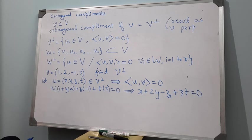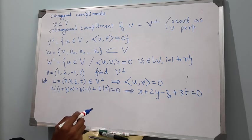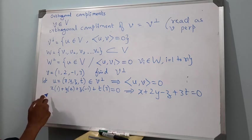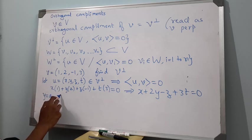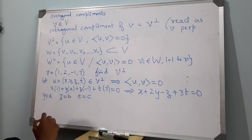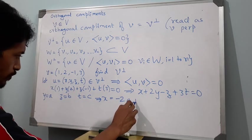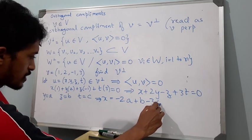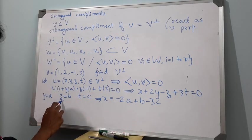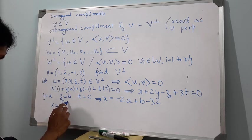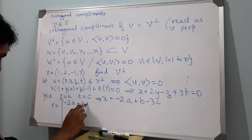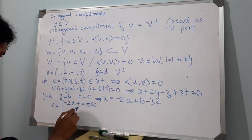So there is only one equation and four unknowns. That means rank is 1 and the number of free variables will be 3. So we take y = a, z = b, t = c as arbitrary values. We end up with x = -2a + b - 3c. Writing this in the form of a column matrix gives (-2a + b - 3c, a, b, c).